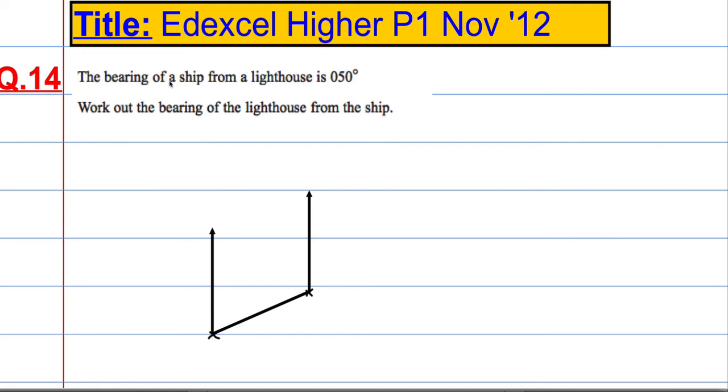Alright, now the bearing, we know that this is going to be 50 degrees. 050, 50. The bearing of a ship from a lighthouse. So from the lighthouse, this is the lighthouse here. That must be the ship. So the bearing of the ship from the lighthouse is 050. Work out the bearing of the lighthouse from the ship. So we need to know what is this angle here or this bearing here.